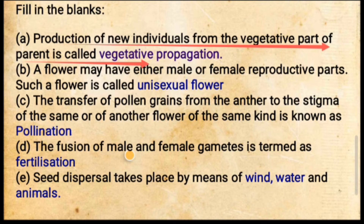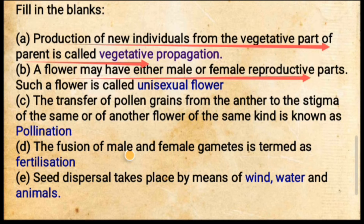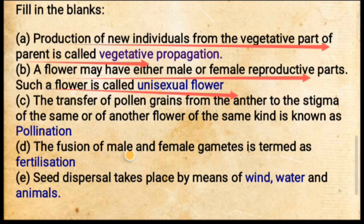Read out the statement and then you are able to select the particular answer. Next one: a flower may have either male or female reproductive parts — such a flower is called dash. The colored part is basically where you have the blank to fill.